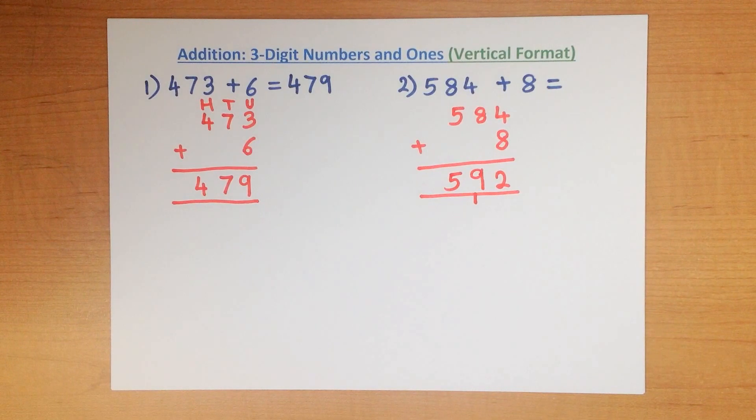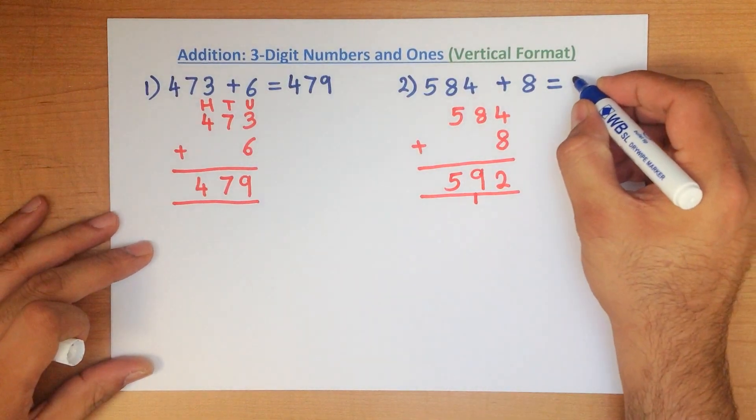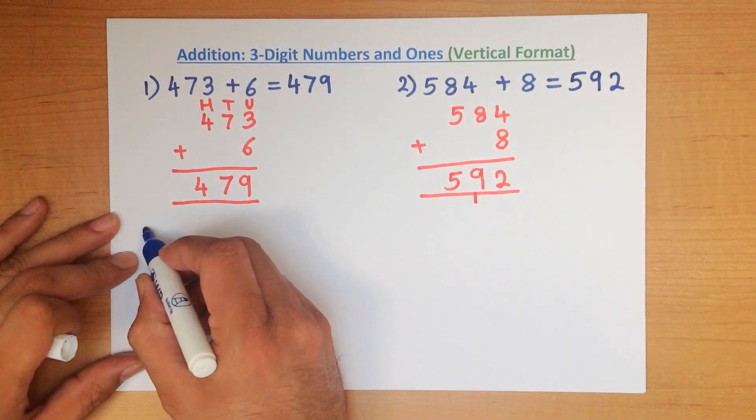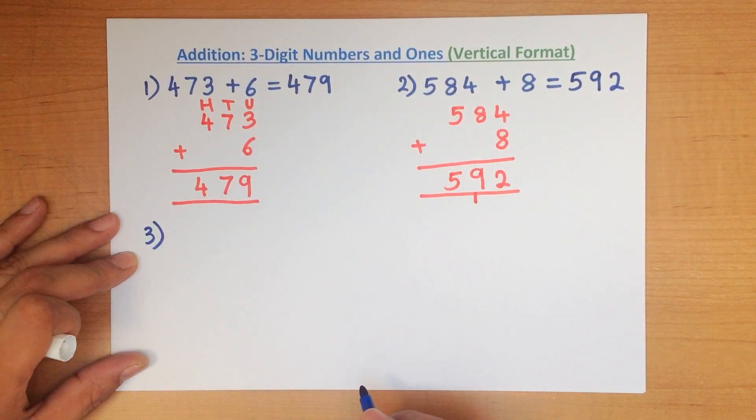584 plus 8 is 592. Let's do one final example.